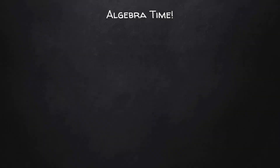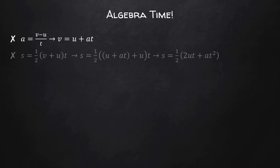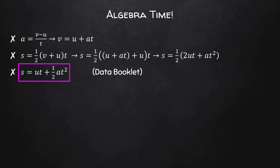Time for some more algebra. Let's take our acceleration equation and rearrange it so that it's solved for final velocity. Then we can take our distance formula and substitute in (U plus AT) for V. Once we simplify, we end up with the equation S equals UT plus one-half AT squared.